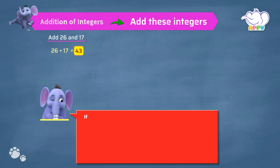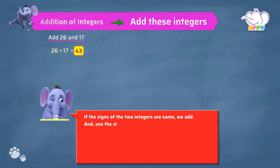Remember, if the signs of the two integers are the same, we add and use the sign of the number. For example, 5 plus 7 equals 12. Minus 5 plus minus 7 equals minus 12.